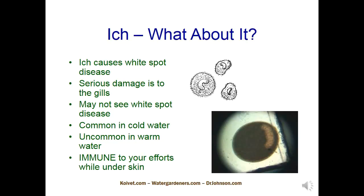Knowing this, warming the water — I like 78 degrees — helps. I'm clearing ich these days with salt, which works fine. If you're worried about dosing or having chemicals around, you can use salt. I also use Mardel Clout — I recently used it in a 360-gallon tank I didn't want to salt. One problem with salt is you've got to get rid of that water afterward, and salt is hard on live plants. In 360 gallons, you're using something on the order of 10 to 12 pounds of salt.